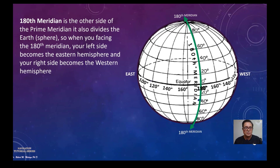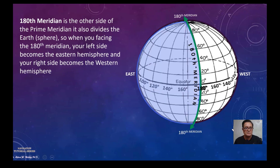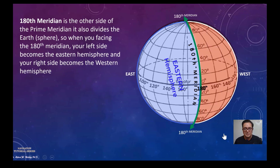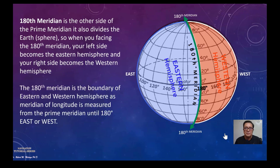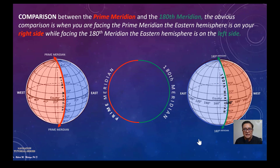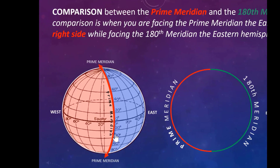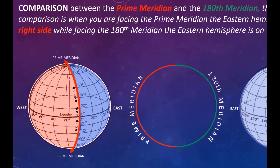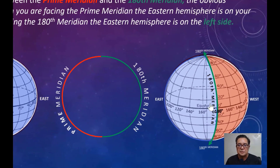The 180th meridian is the other side of the prime meridian. It also divides the Earth into two equal parts. When facing the 180th meridian, your left side is the Eastern Hemisphere and your right side is the Western Hemisphere. The 180th meridian is the boundary of the Eastern and Western hemispheres, as meridians of longitude are measured from the prime meridian until 180 degrees east or west.